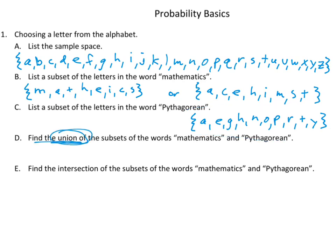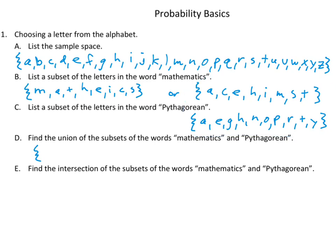We need to find the union of the two subsets of the words 'mathematics' and 'Pythagorean,' which means all the letters that are in either of the two. I'm going to look through my list and write down all the unique letters — basically putting the two sets together. So you've got A, C, E, G, H, I, M, N, O, P, R, S, T, and Y.